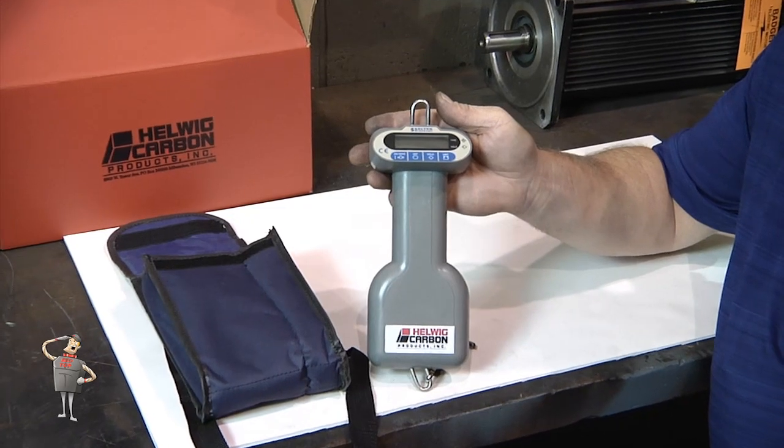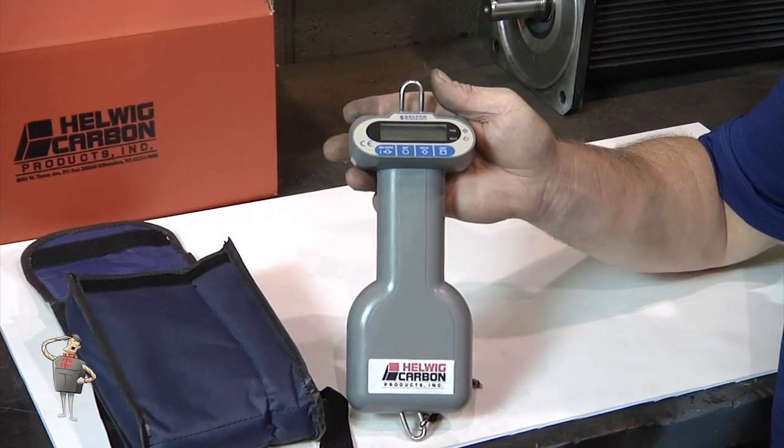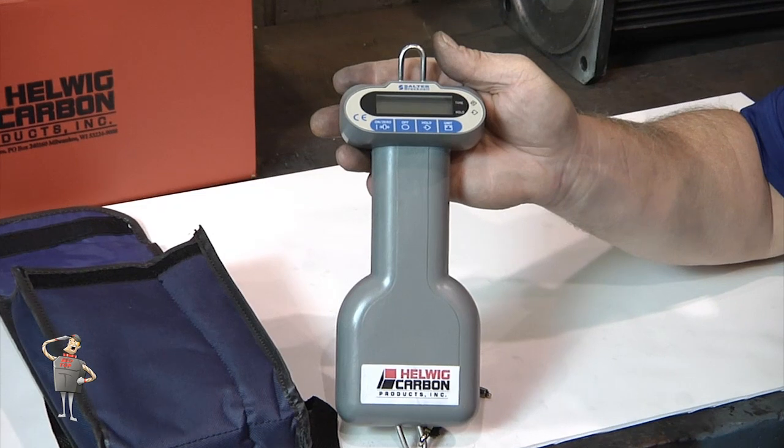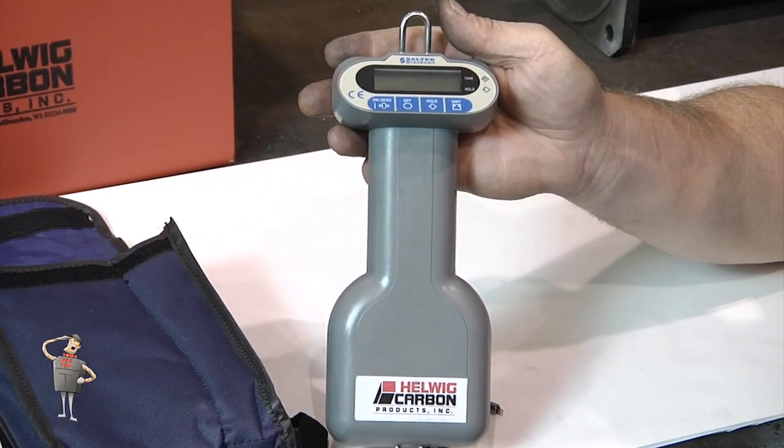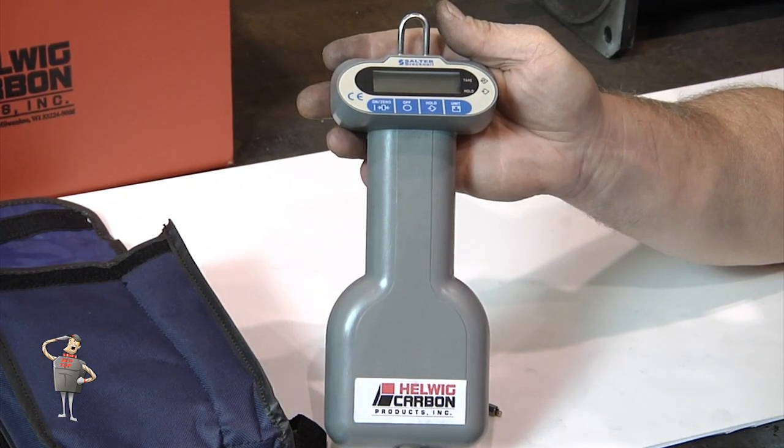This Helwig carbon scale is easily recalibrated as needed for long-term accuracy. Remember to recalibrate periodically. See the chart for recommended spring pressures.